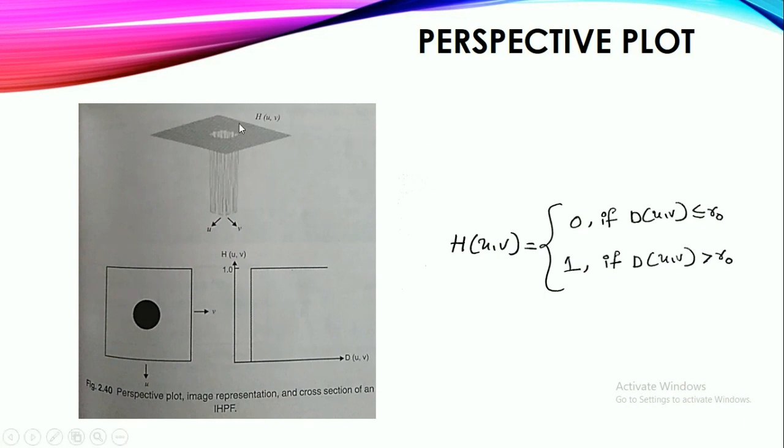So here is the perspective plot of this ideal high pass filter. If you see this perspective plot in the form of image, this is the representation of this ideal high pass filter. And here is the image representing the characteristics of this ideal high pass filter.